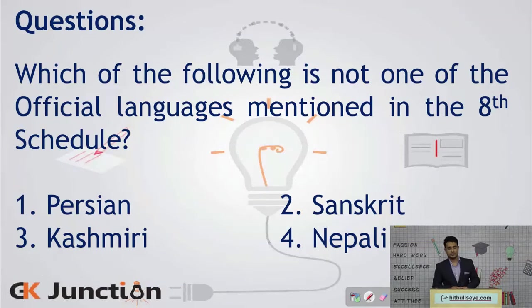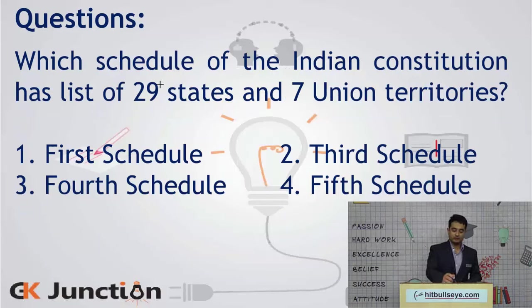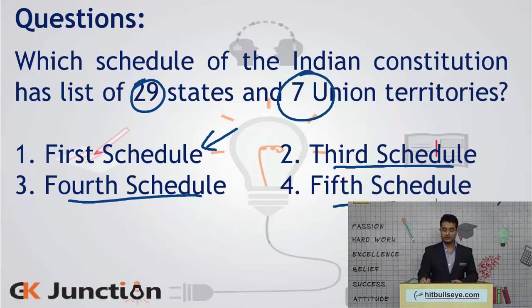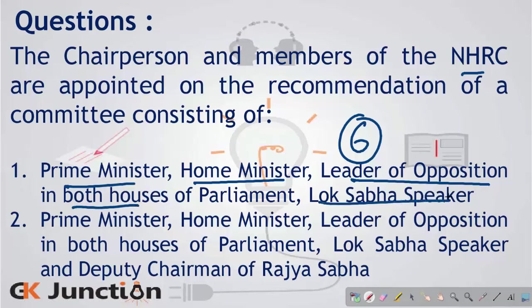Let's quickly go through some previous exam questions. Which of the following is not one of the official languages in the eighth schedule? There are 22 languages including Sanskrit, Nepali and Kashmiri, but Persian is not part of the eighth schedule. Which schedule lists the states and union territories? That would be the first schedule. The third schedule covers oaths; the fourth covers allocation of Rajya Sabha seats to states; the fifth covers administration of scheduled areas and tribes. Regarding the NHRC appointment committee — it is a six-member body consisting of the Prime Minister, Home Minister, leaders of opposition of both houses, the Speaker of Lok Sabha and the Deputy Chairperson of Rajya Sabha.